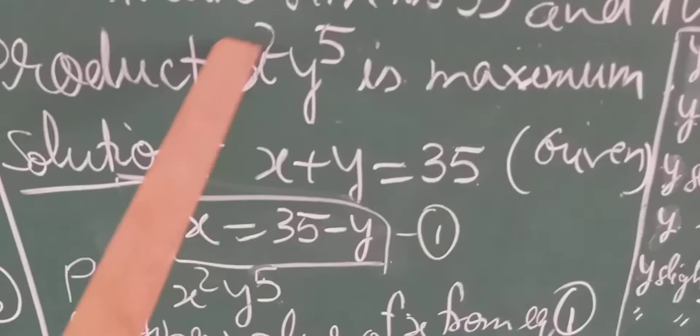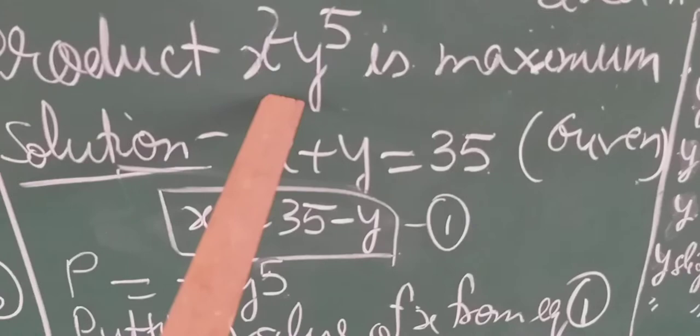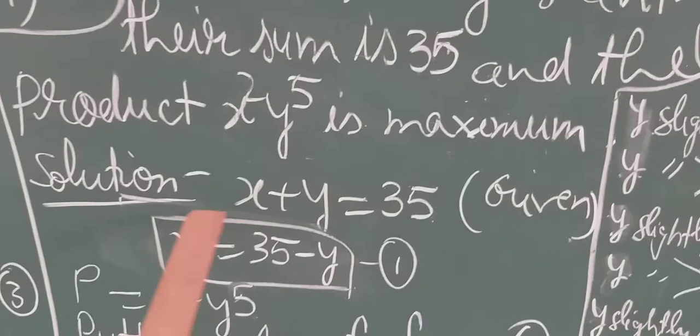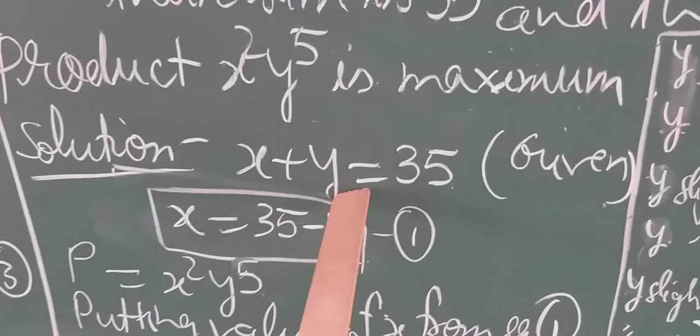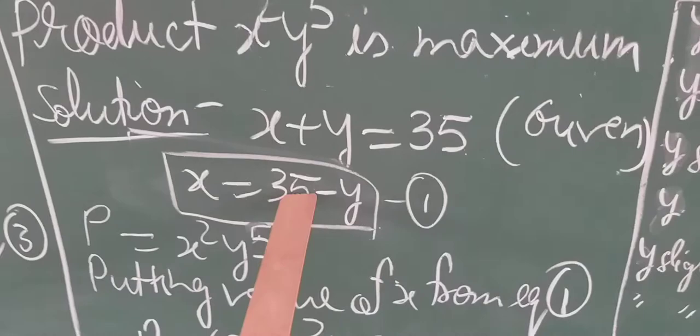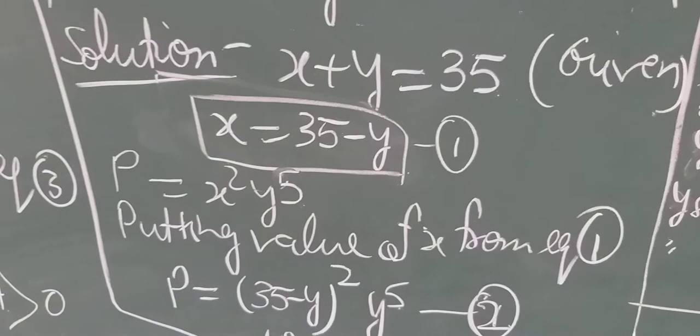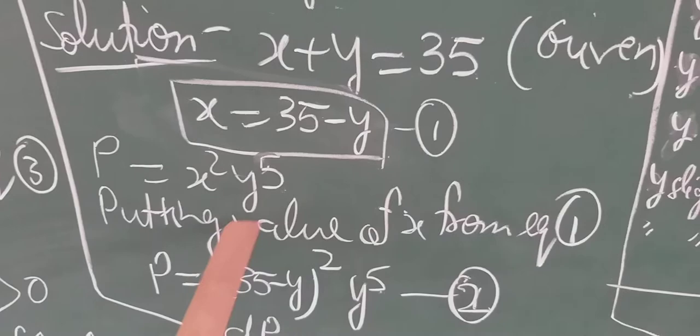The sum of two numbers is 35: x + y = 35 (given). We can find the value of one variable; taking x = 35 − y (equation 1). The product is P = x²y⁵. Substituting the value of x from equation 1: P = (35 − y)² · y⁵.